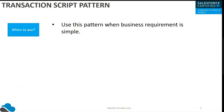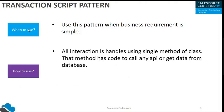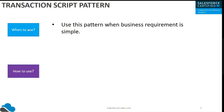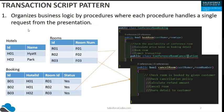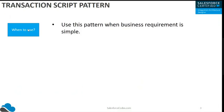We should use the Transaction Script Pattern when the business requirement is very simple, as in our example. In terms of implementation, all interaction is handled using a single method of a class, and that method has code for any API or data interaction. In our example, the BookRoom class has a bookRoom method where we call other functionality.